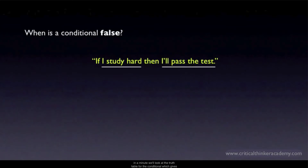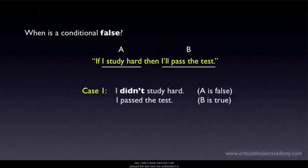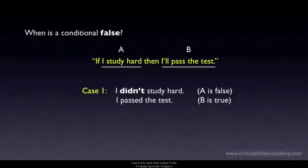We'll look at the truth table for the conditional, which gives you the truth value of the conditional for every possible combination of truth values of A and B. The easiest way to understand it is to think about when we would judge a conditional to be false. Consider: if I study hard, then I'll pass the test. First, suppose I didn't study hard but still passed — the antecedent is false, the consequent is true. Would the conditional be false? No, because the conditional doesn't say the only way to pass is by studying hard. So this combination doesn't make the conditional false.